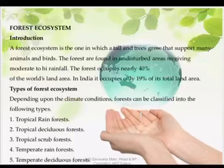Among the terrestrial ecosystems, first we will be taking the forest ecosystem. Forests occupy roughly 40% of the land in India — actually, forests occupy roughly one-tenth of the total land area. The different components of a forest ecosystem are as follows. Depending upon the climate conditions, forests can be classified into the following types.